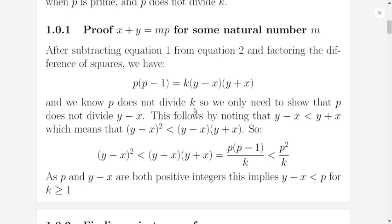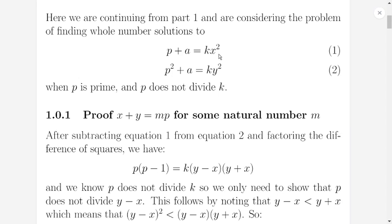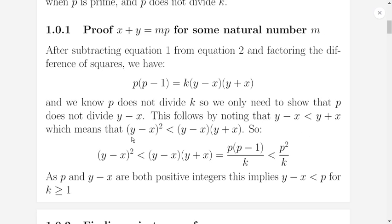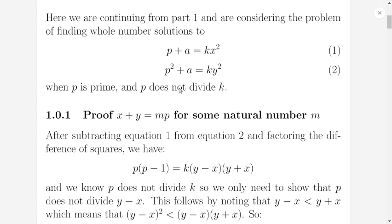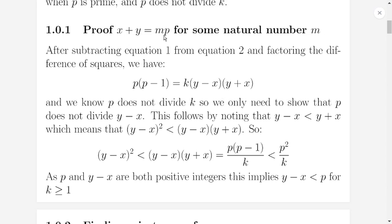And if p does not divide k, then to show that p divides y plus x, we just need to show that it doesn't divide y minus x. And we can do that fairly easily because y minus x is less than y plus x, which it is because x is positive. This means that y minus x squared is less than y minus x times y plus x, fairly obviously. And that's this thing here. So we can plug that in to get the inequality that is less than p squared over k. So for k greater than or equal to 1, this thing is going to be less than p. So p can't divide it. Which means that if p does not divide k, we must have x plus y equals m times p.